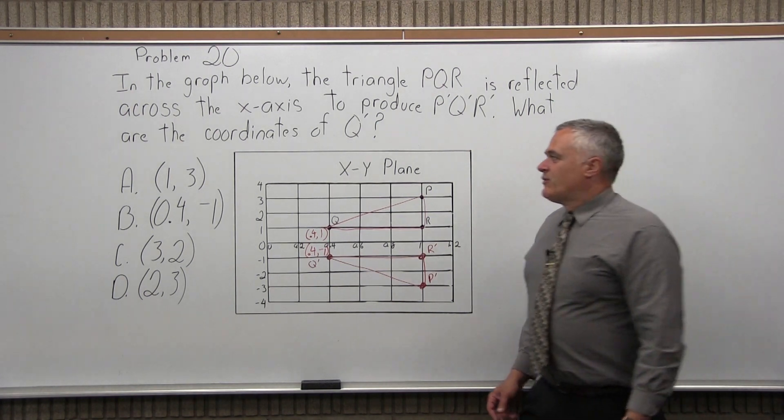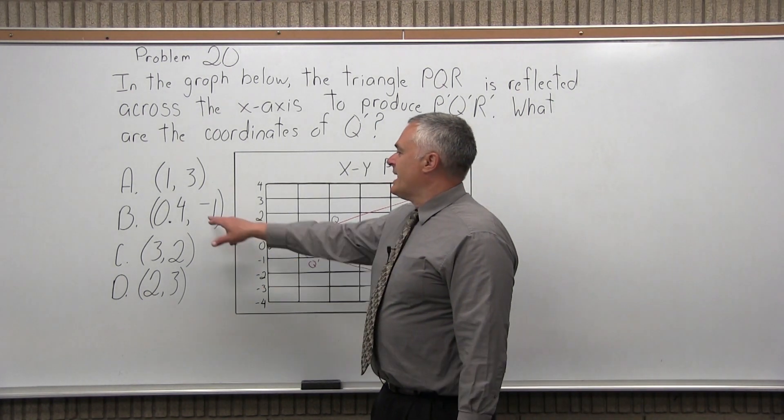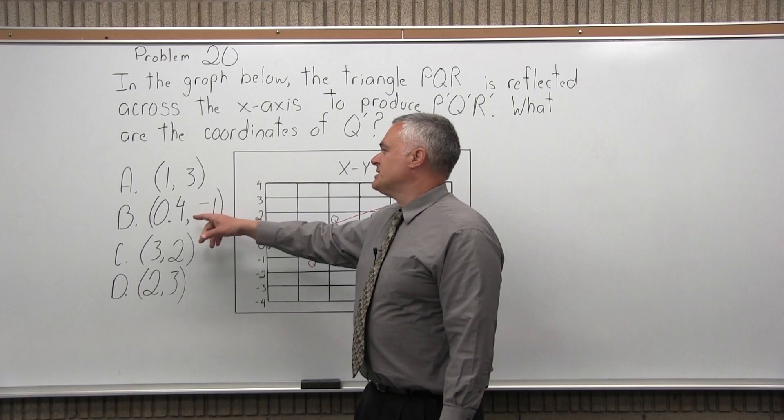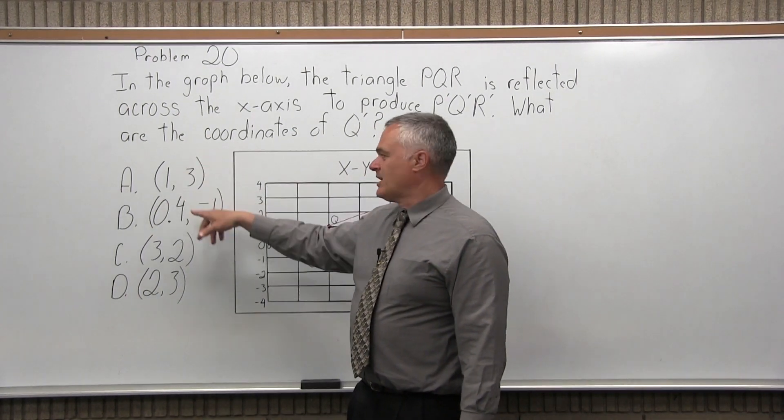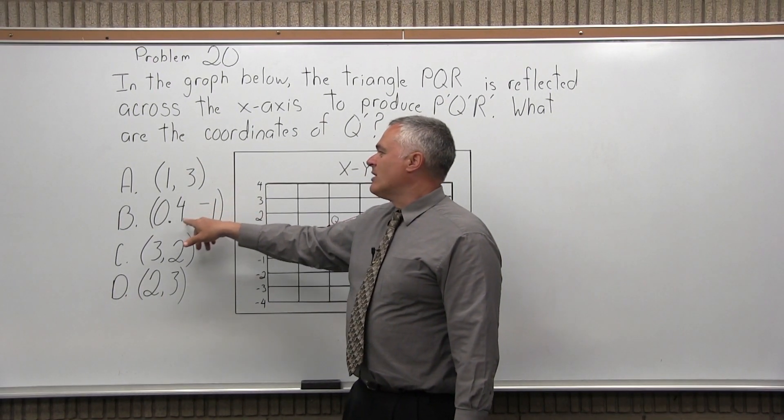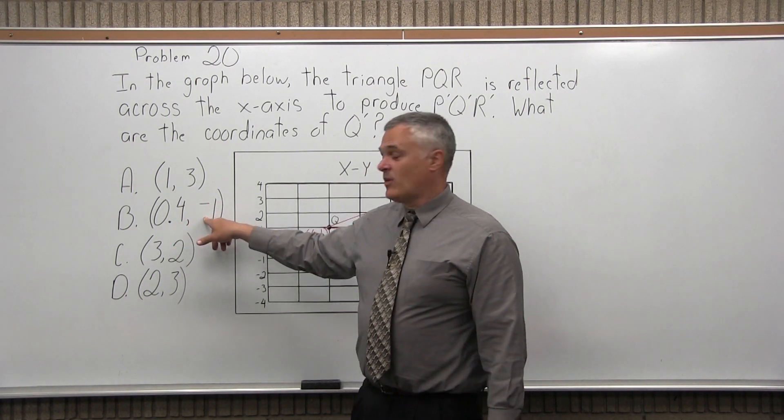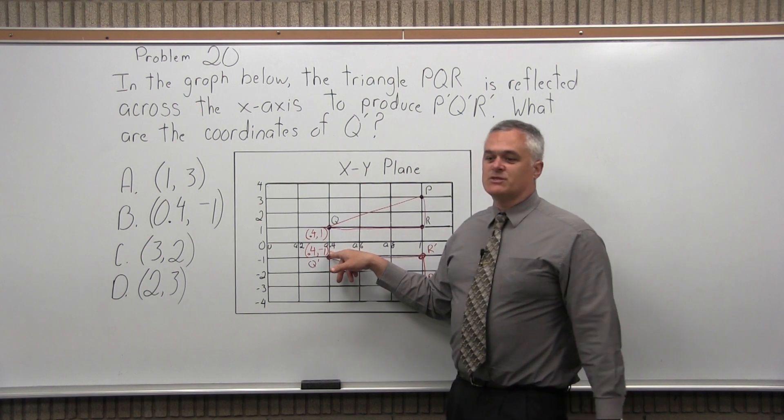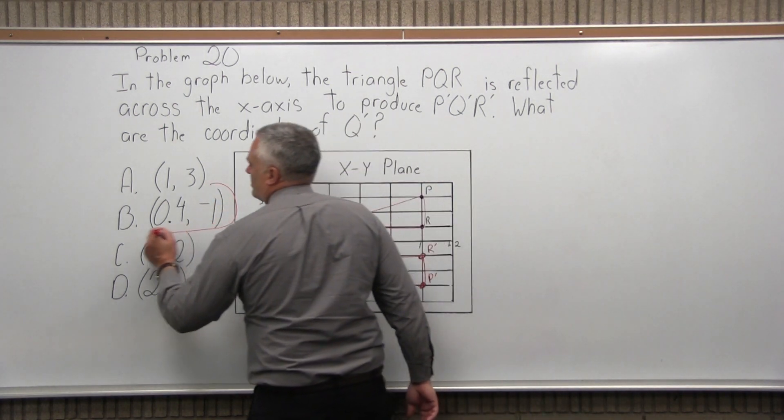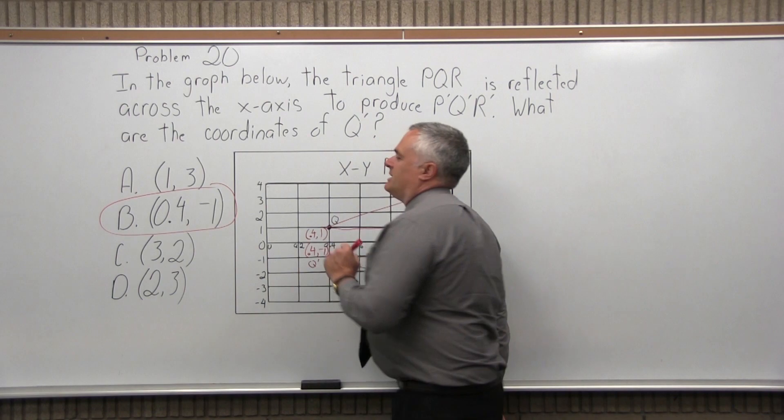Now, as I look at my list of four options, that is one of the options. Again, in the options they have the zero listed first. A is one, three, that's not it. But the next one down, 0.4 positive for the x coordinate, negative one for the y coordinate, that is a match for what we have. So the answer to problem 20 is option B.